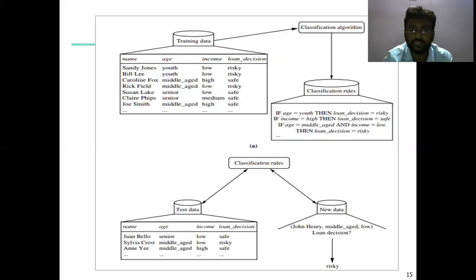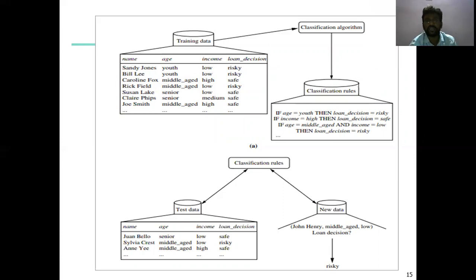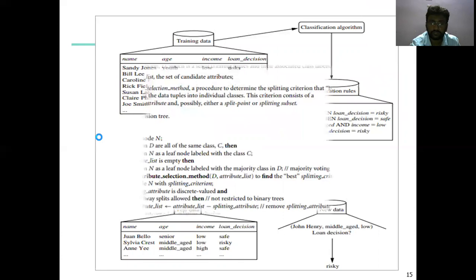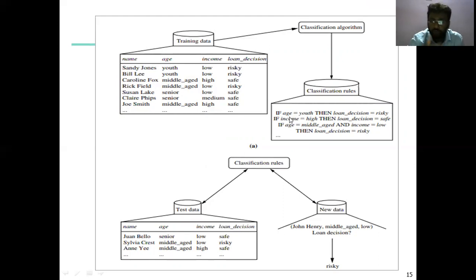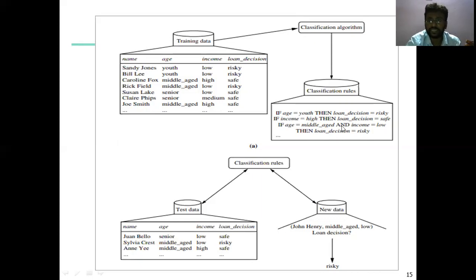Let's take an example of creating a decision tree. The training data available here has attributes: name, age, income, and loan decision. This data is analyzed and applied using the classification algorithm. The classification rules are: if age is youth, then loan decision is risky; if income is high, then loan decision is safe; if age is middle age and income is low, then loan decision is risky.